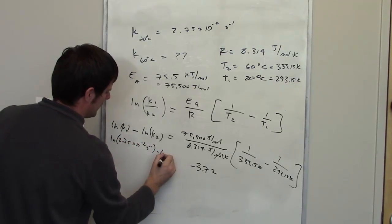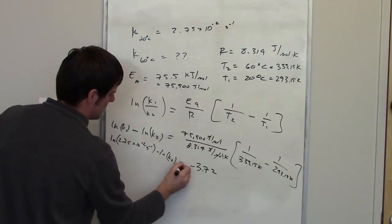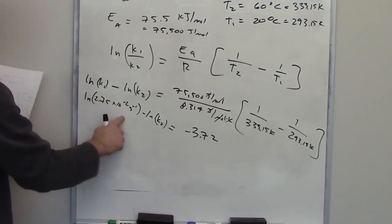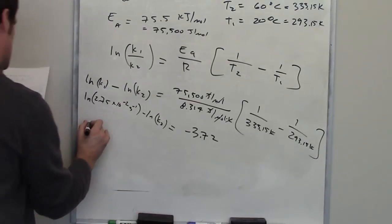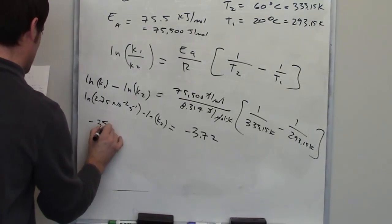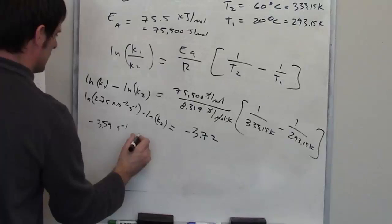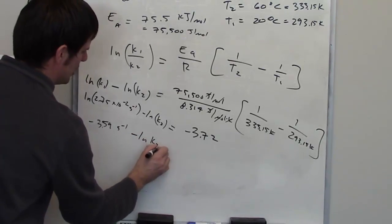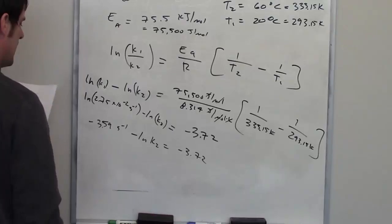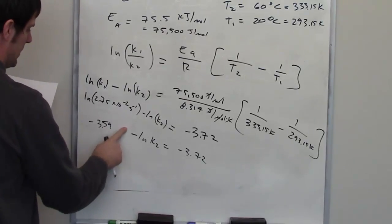I throw this into my calculator, and I end up getting a negative 3.59 inverse seconds, minus the LN of K2 equals negative 3.72. I think it's assumed that we're going to ignore the units on this one. Maybe that's a questionable behavior, but I'm okay with it.